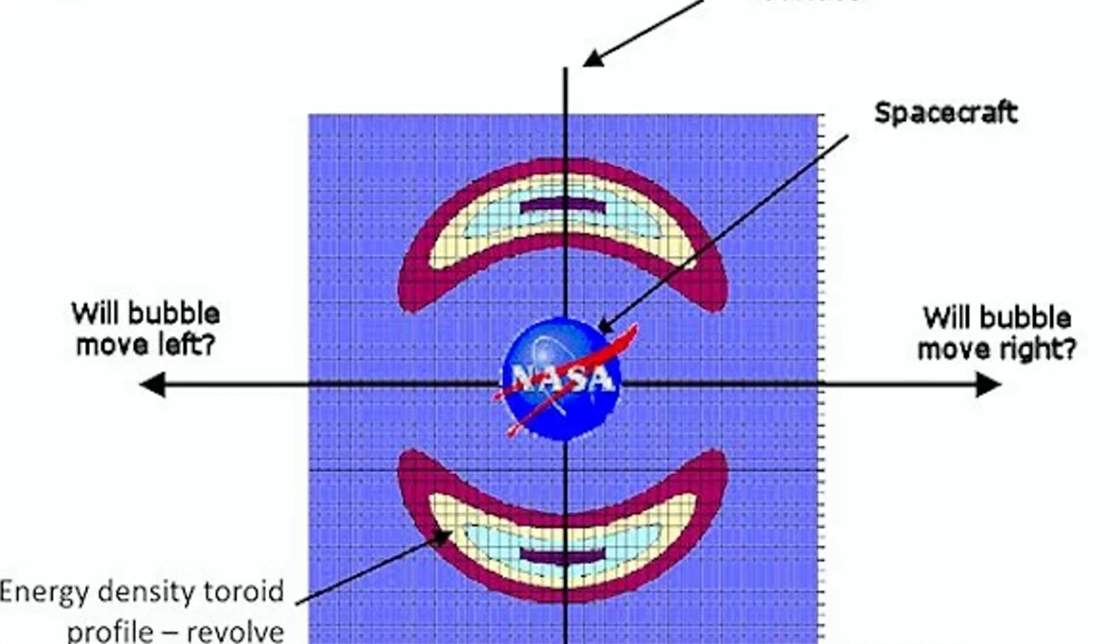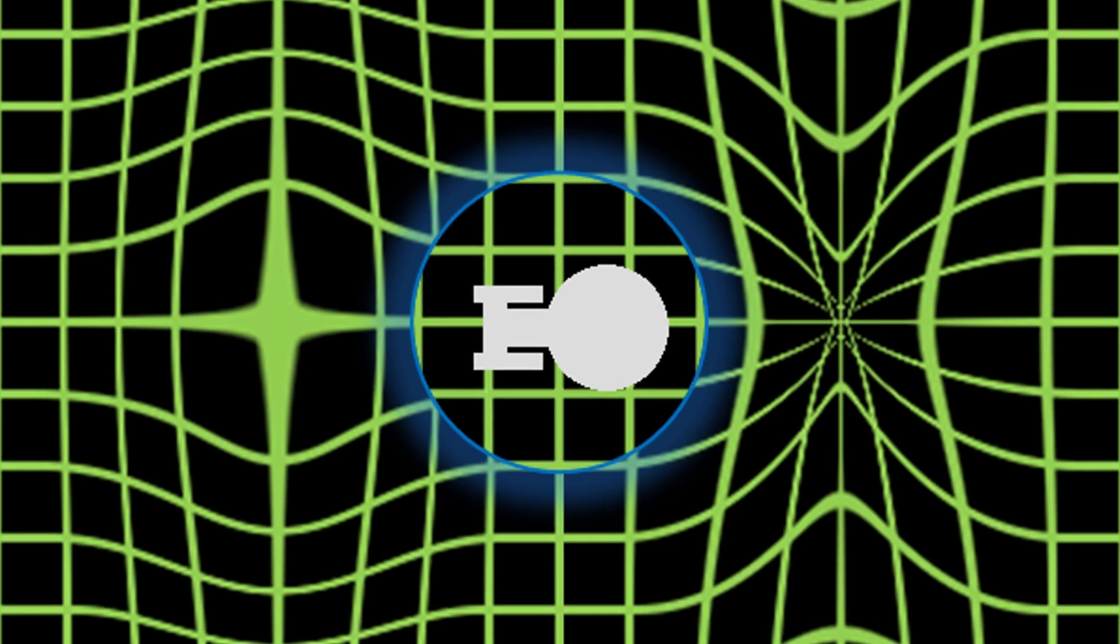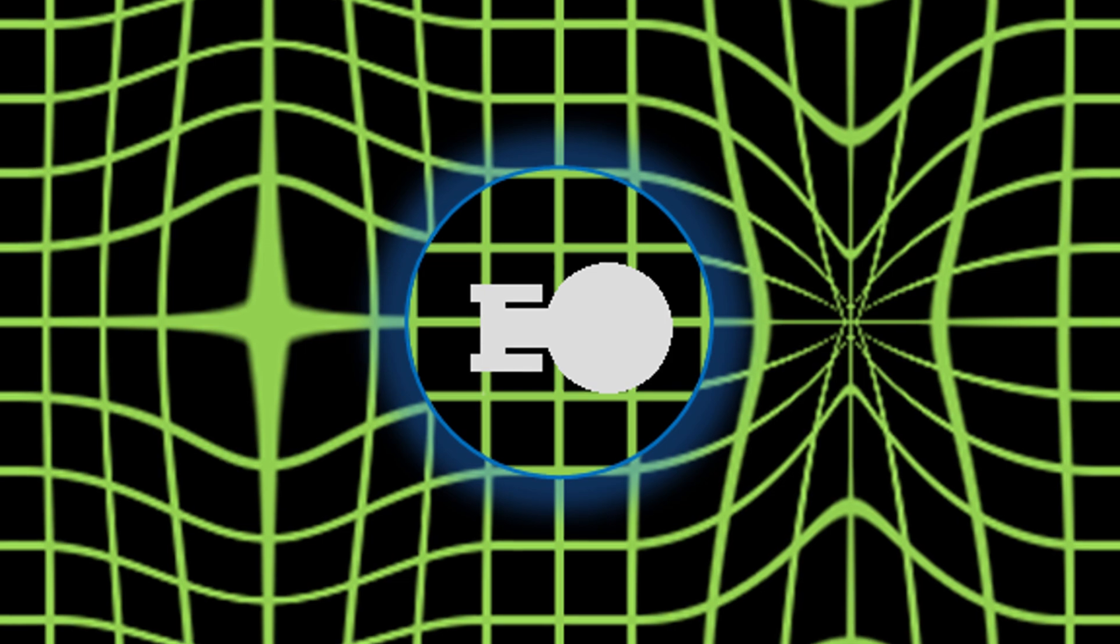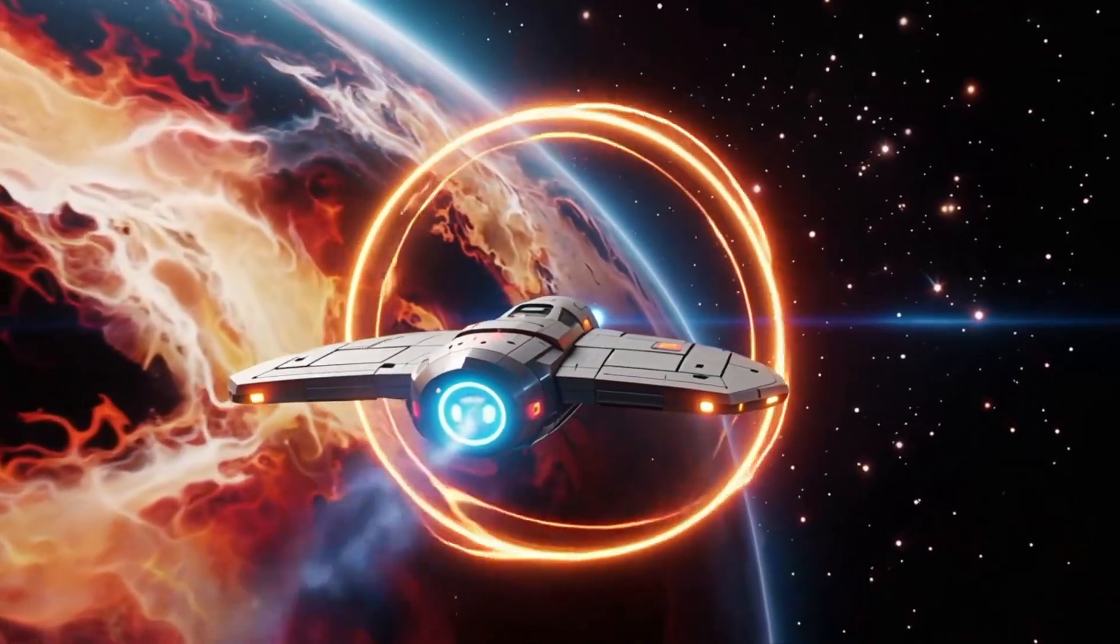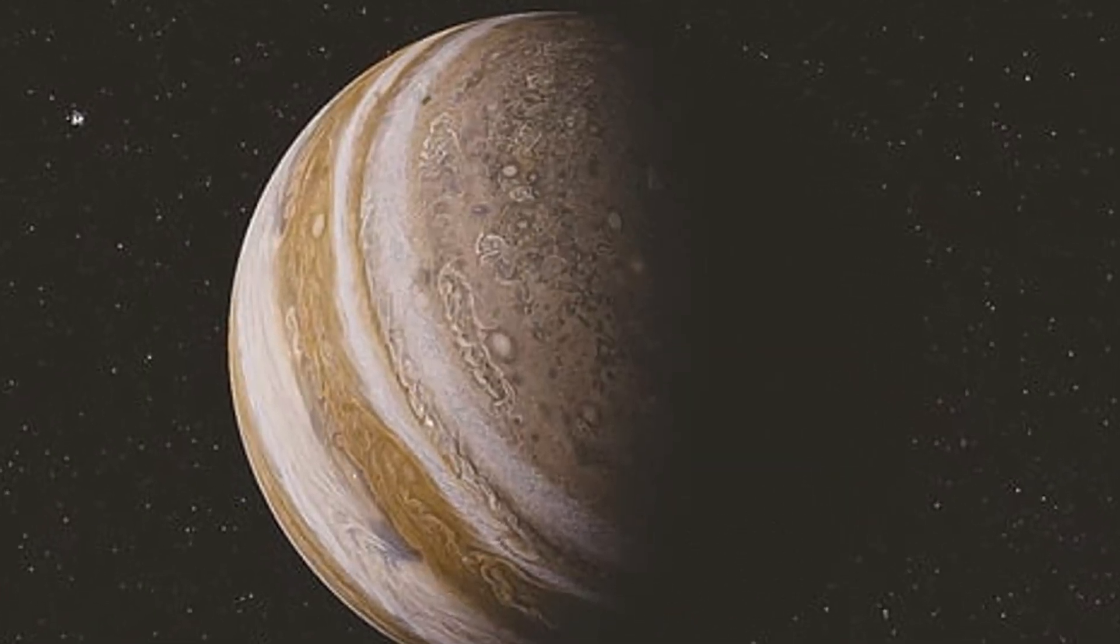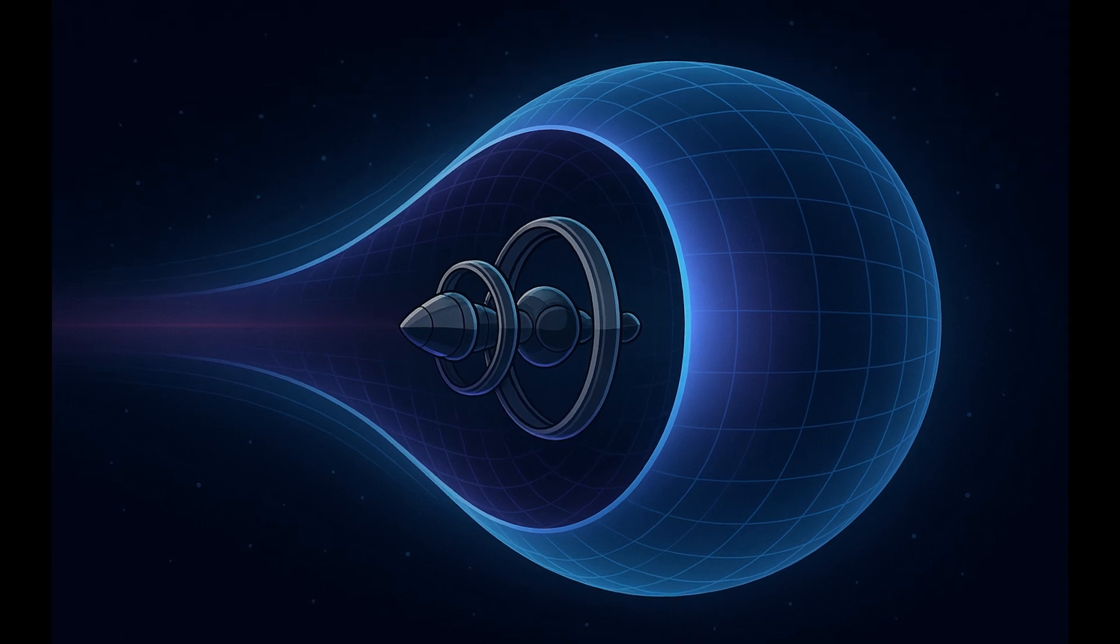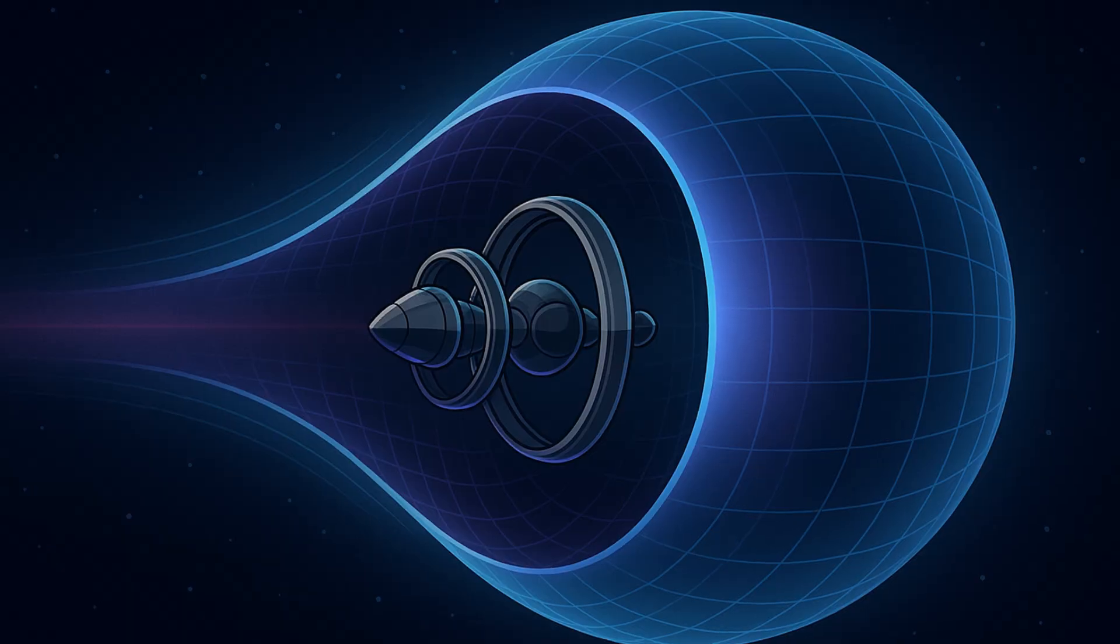Physicist Harold Sonny White, the project leader, proposed modifications to Alcubierre's original idea. Changes to the shape of the warp bubble that drastically reduce the energy required. Instead of energy equivalent to the mass of Jupiter, the adjusted concept could require something equivalent to a few tons of exotic matter. Still impossible, but more plausible than the initial version.